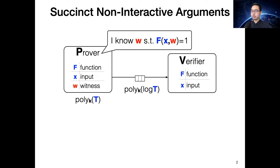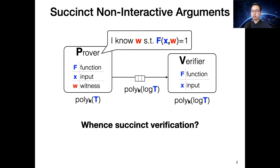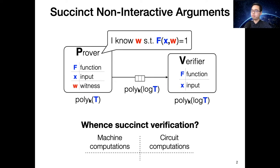Verification is sometimes linear to the computation, but if you want succinct verification, it should also run exponentially faster than the computation. One goal of our work is to achieve succinct verification, but the question is where does this succinct verification come from? Depending on the type of computation, there are two options. If you are doing machine computation, you can leverage the uniformity of the computation, and it is possible for the verifier to run in time proportional to the description of the computation, not the size of the computation.